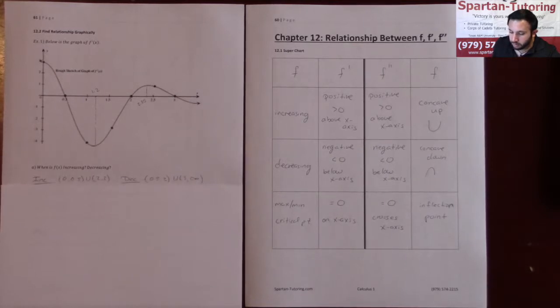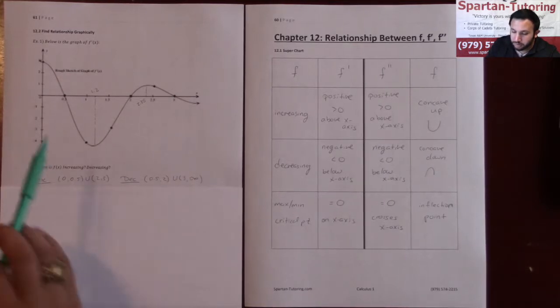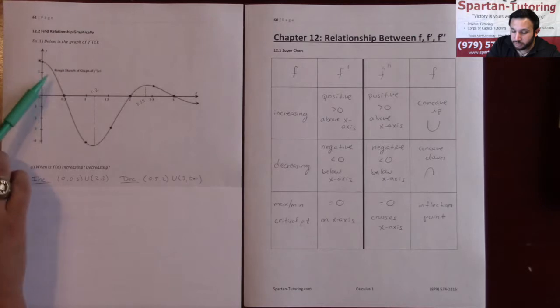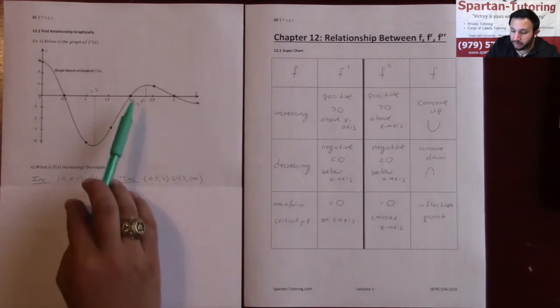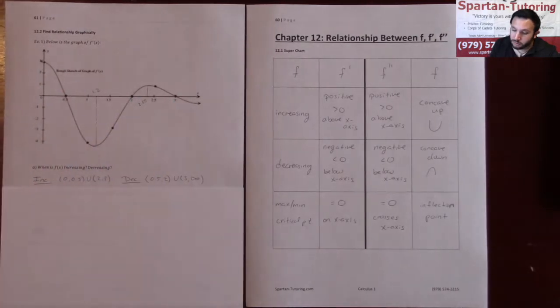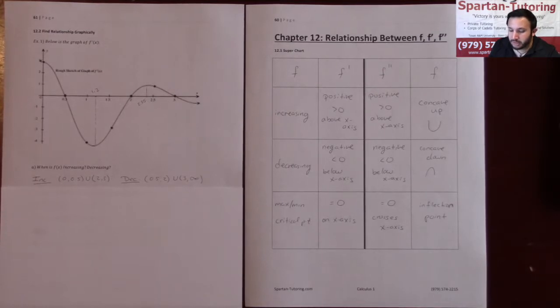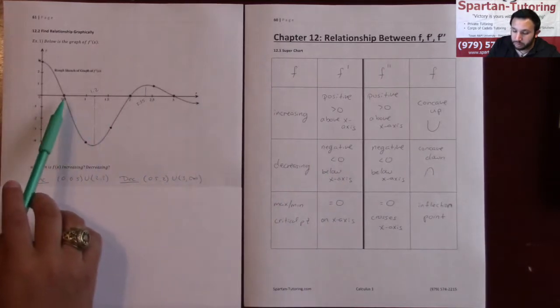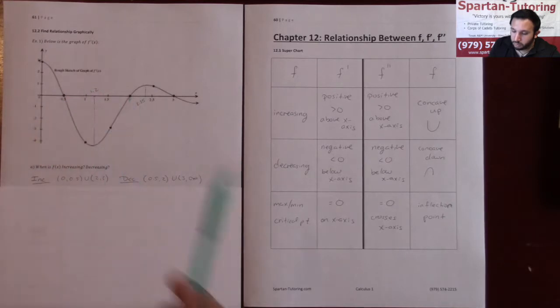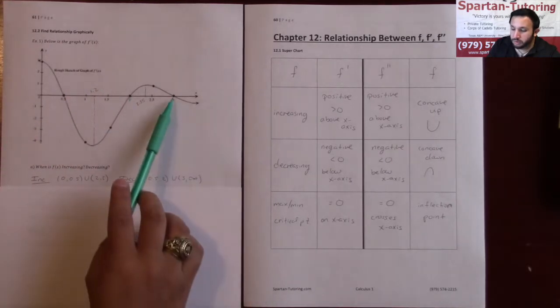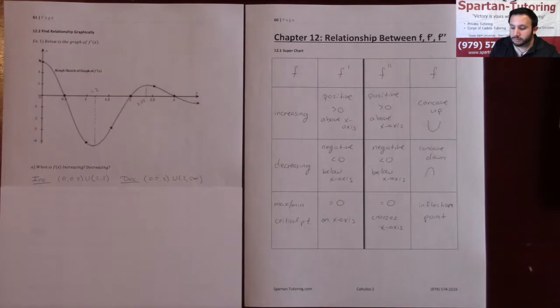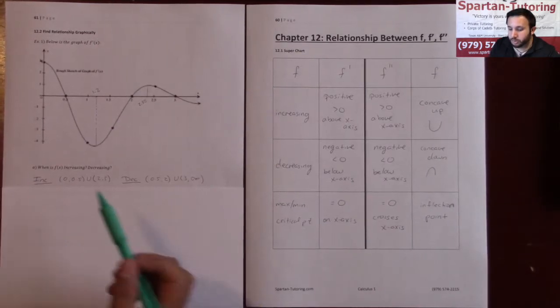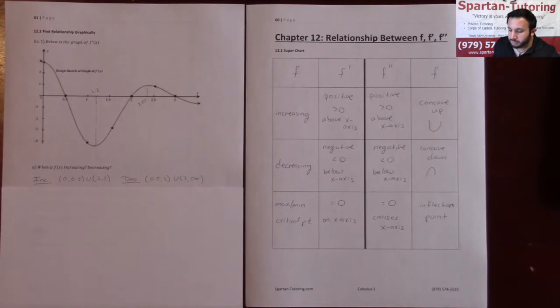Therefore, I am increasing whenever I'm above the x-axis, so it's from 0 to 0.5 and then again from 2 to 3. You're decreasing whenever the derivative is below the x-axis, between 0.5 and 2 and then from 3 to infinity. That's it, that's when your original function is increasing and decreasing.